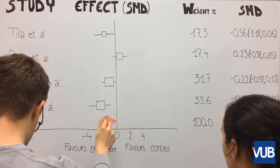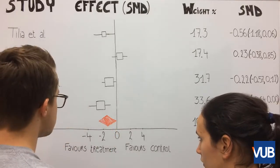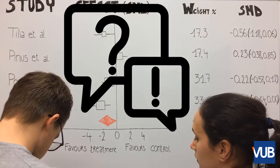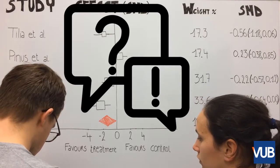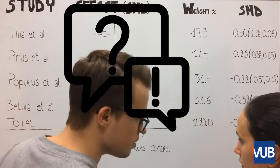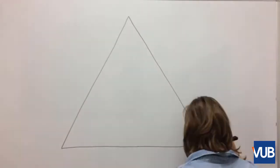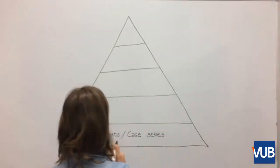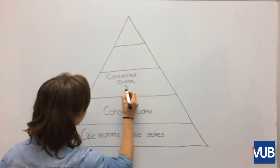A forest plot, also known as a blobogram, is a graphical display of estimated results from a number of scientific studies addressing the same question, along with the overall results. It is important for clinical reasoning that high evidence levels are used. Therefore, systematic review and meta-analysis are the perfect tools.